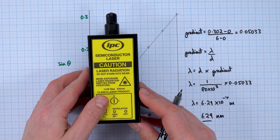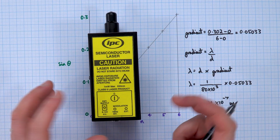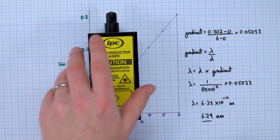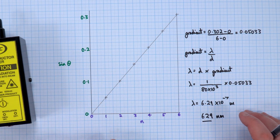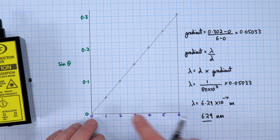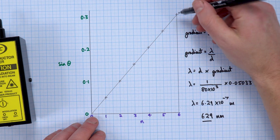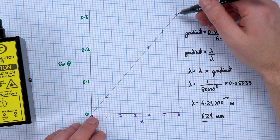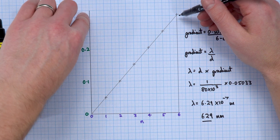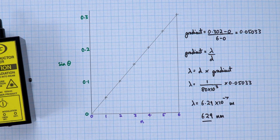629 nanometres is the kind of value we'd expect for red light. It actually happens that 630 nanometres is the stated value on this laser, if that's actually true. Because we could measure the values of theta to three significant figures, and I'm sure we can measure that to three significant figures from the scale we had, I think it's justifiable to give the answer as 629 nanometres.